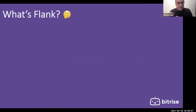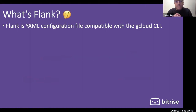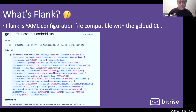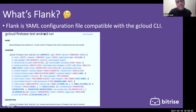Flank is a YAML configuration file compatible with the GCloud CLI. It lets you write all configuration in one YAML file, and then you run the Flank command line which reads that file and sends it to Firebase Test Lab to run the target application. Previously with GCloud CLI alone, you had to install and configure GCloud, authenticate it, and run 'gcloud firebase test android run' with many parameters: application, device type, device version, OS version, timeout, test package, network profile, Google login, and more. It was easy to make syntax mistakes. Now with Flank, all configuration is in one YAML file.